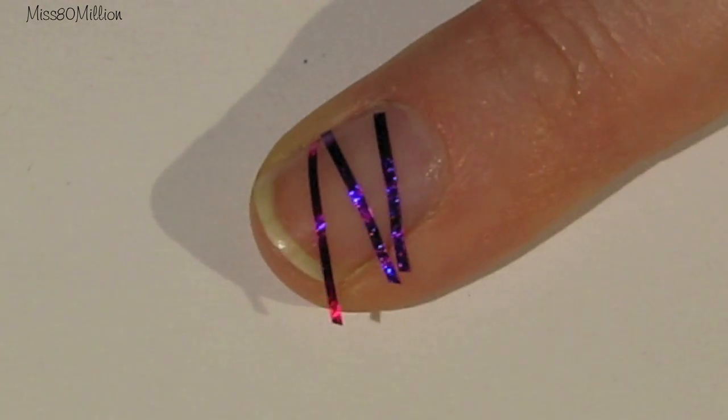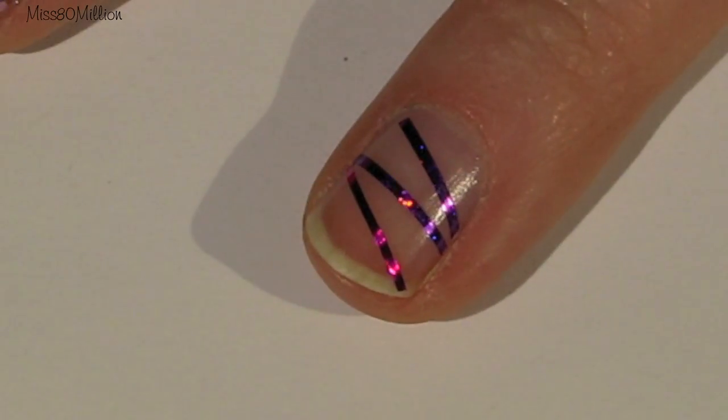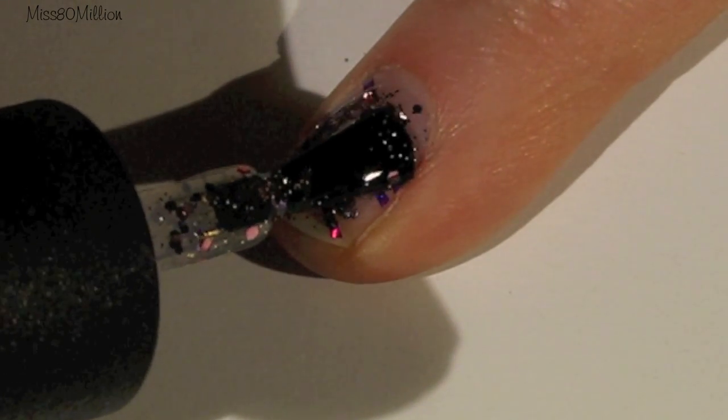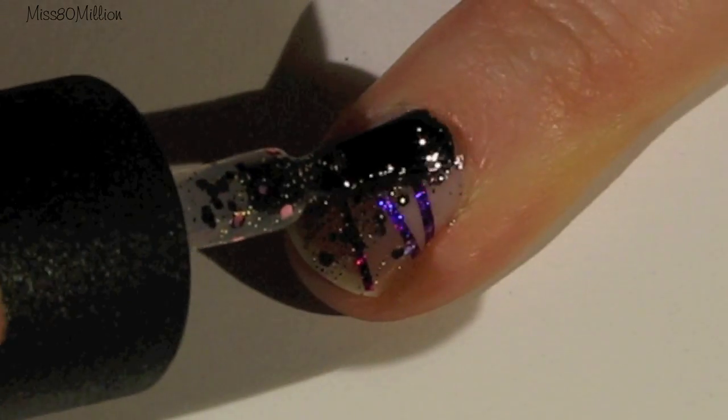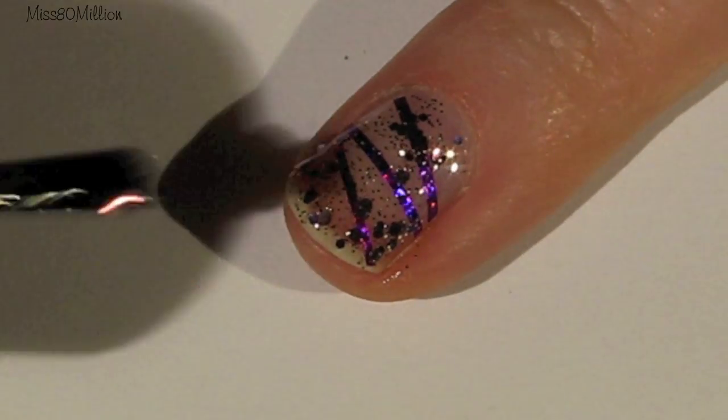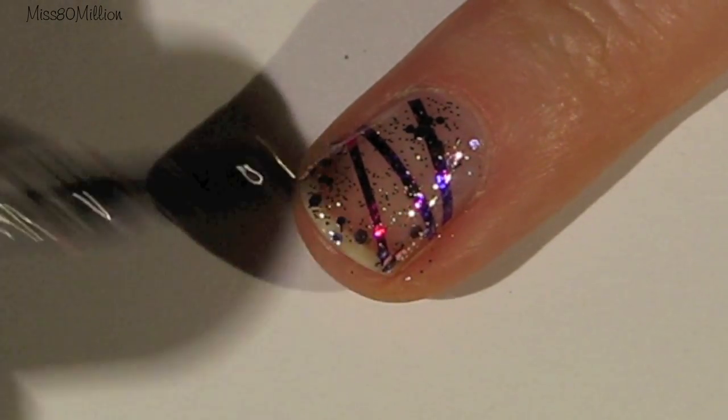Now that I've got my nail tape applied, I am going to apply my glitter nail polish. This glitter nail polish that I'm using is from the Selena Gomez Nicole by OPI collection and it's called Inner Sparkle.